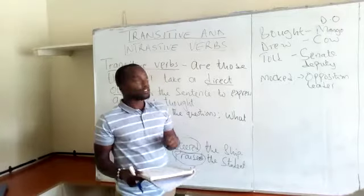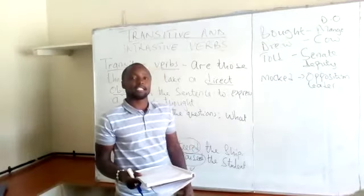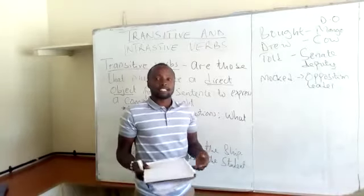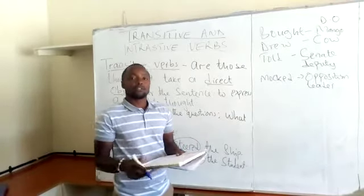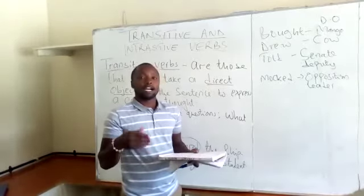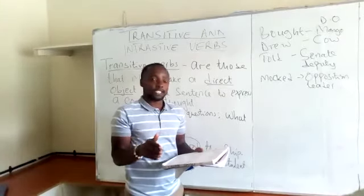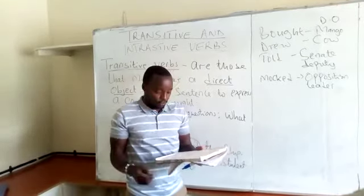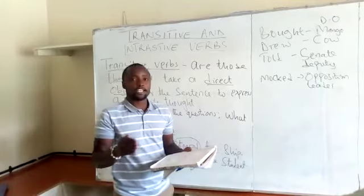It is good to know that transitive verbs can have two objects: the direct and the indirect object. And still, if those objects are not there, then the sentence will not make sense. For example, you can say 'Lulu bought Kigame a guitar.' You will notice that the action 'bought' must be followed by these objects to make sense. For example, you can say 'Kemani sold him a car.'